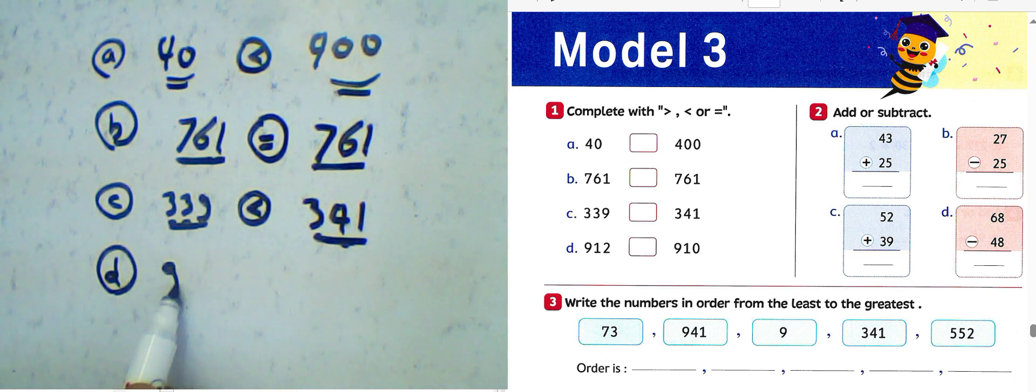Next question, letter D: 912 and 910. We have three digits, equivalent three digits. 9 equivalent to 9, 1 equal 1, but 2 greater than 0. Then we must choose this sign: 912 is greater than 910.